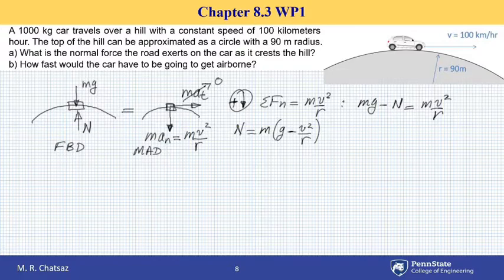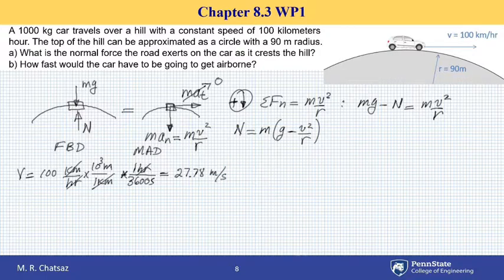And since I want to use primary units, let's convert the given velocity of 100 km per hour to meters per second. One kilometer is 1,000 meter and one hour is 3,600 seconds. If I multiply by 1,000 and divide by 3,600, speed turns out to be 27.78 meters per second.